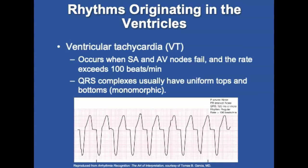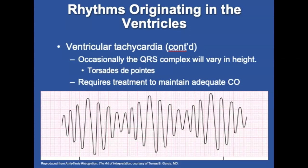Ventricular tachycardia (V-tach) is a ventricular rhythm with a rate exceeding 100 beats per minute. The rhythm is regular with no variation between R-on-R intervals. P waves are absent, no PRI exists, and the QRS complex is 0.12 seconds or more — a wide QRS complex. Occasionally, the QRS will vary in height in an alternating pattern — that is polymorphic ventricular tachycardia. A wide irregular tachycardia is present in about 25% of out-of-hospital cardiac arrests involving ventricular tachycardia; the most common form is Torsades de Pointes, which may convert spontaneously or degenerate into ventricular fibrillation.